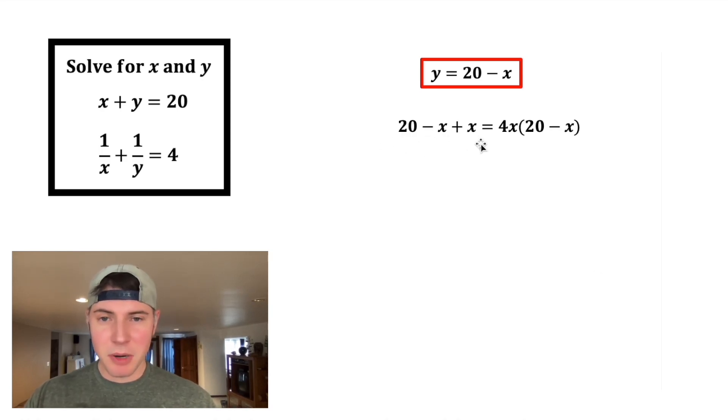Let's get rid of the parentheses, and negative x and positive x are just gonna go away, so I'll have 20 on the left-hand side. On the right-hand side, this 4x is gonna distribute to both of those. 4x times 20 is 80x, and x times 4x is 4x squared.